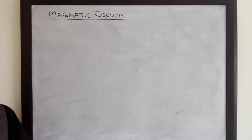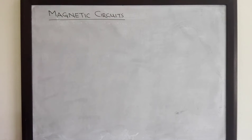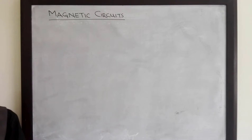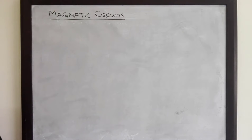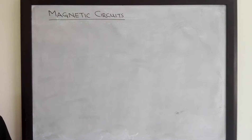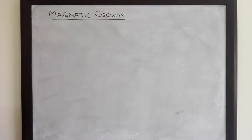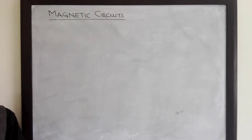Assalamu alaikum. In today's lecture we shall talk about magnetic circuits and we shall learn how to analyze magnetic circuits. We know that magnetic lines of flux follow a closed path, and the closed path followed by magnetic lines of flux is called a magnetic circuit.